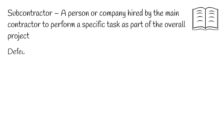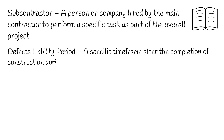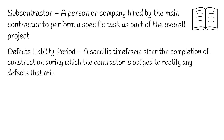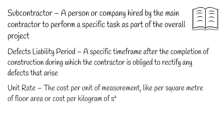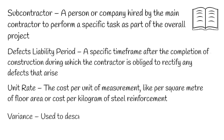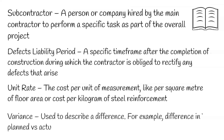Term 19. Defects Liability Period — a specific time frame after the completion of construction during which the contractor is obliged to rectify any defects that arise. Term 20. Unit Rate — the cost per unit of measurement, like per square metre of floor area or cost per kilogram of steel reinforcement. Term 21. Variance — used to describe a difference; for example, difference in planned versus actual cost, or planned versus actual completion.